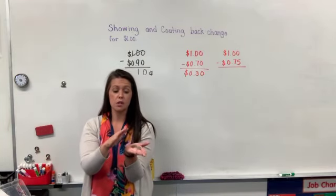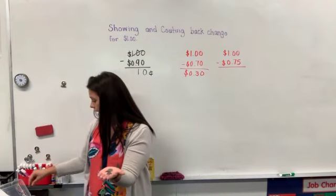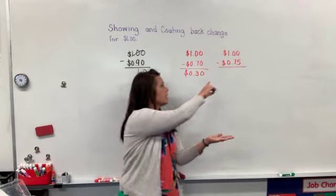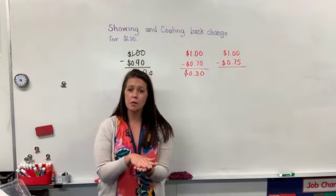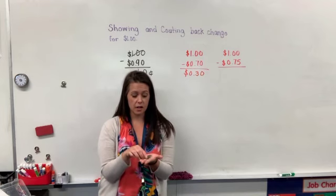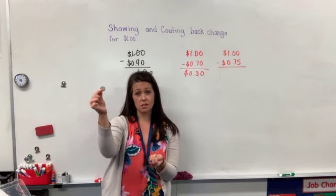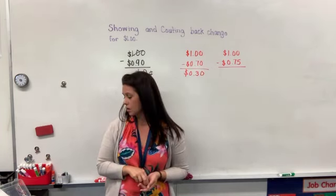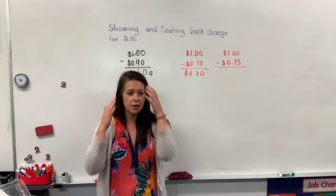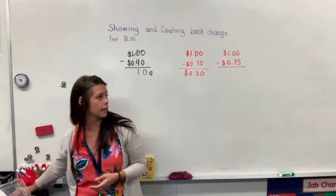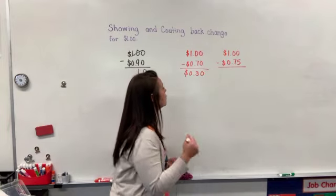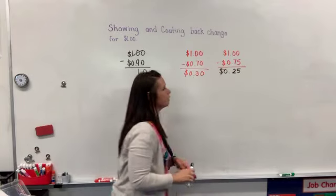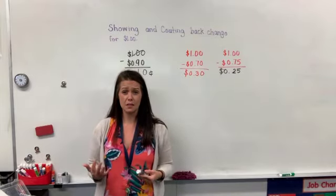25, 50, 75 — so three quarters equals 75 cents. If I added another quarter that would give me a dollar. I'm spending 75 cents on my box of band-aids, so how much money would I get back? The answer is one quarter — 25 cents — because I spend 75 and get one quarter back as my change. So my answer is 25 cents.